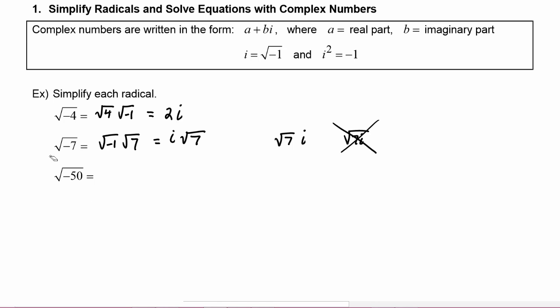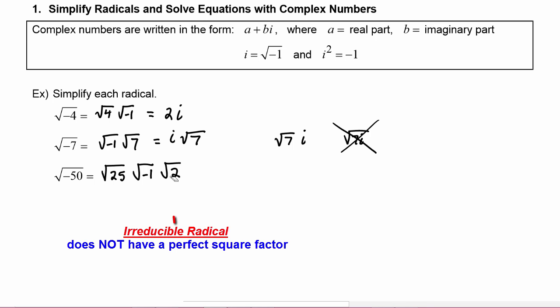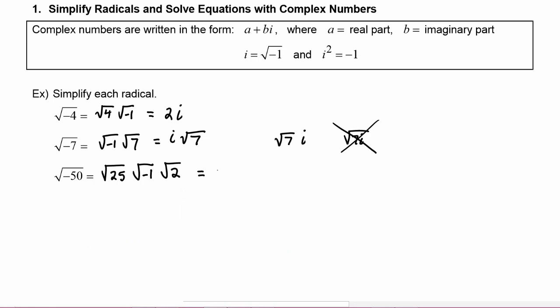In this next one we have the square root of negative 50. Fifty has as a factor the perfect square of 25, so we write radical 25 times radical negative one times radical two. Radical two is last because it is an irreducible radical. When we simplify, this becomes 5i radical two.